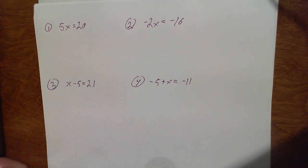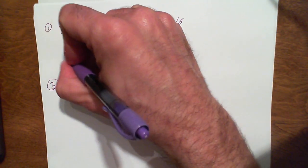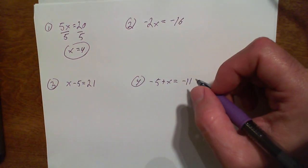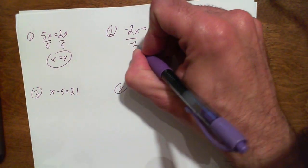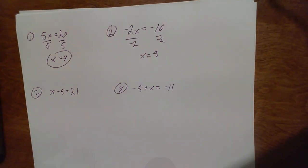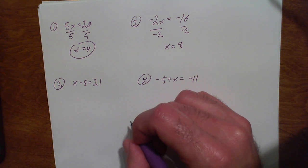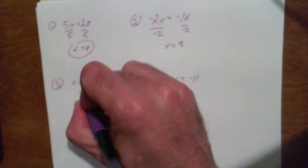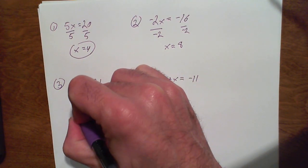I'm going to go ahead and get started right now. 5x equals 20. We divide by 5 on both sides. 20 divided by 5 is 4, so x equals 4. Next, negative 2x equals negative 16. We divide both sides by negative 2, and x equals positive 8. Then x minus 5 equals 21. We add 5 on both sides, 21 plus 5 is 26, so x equals 26.